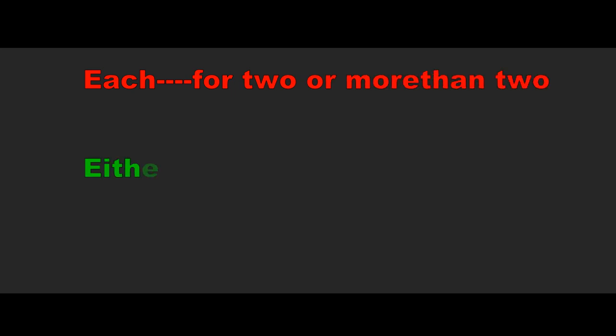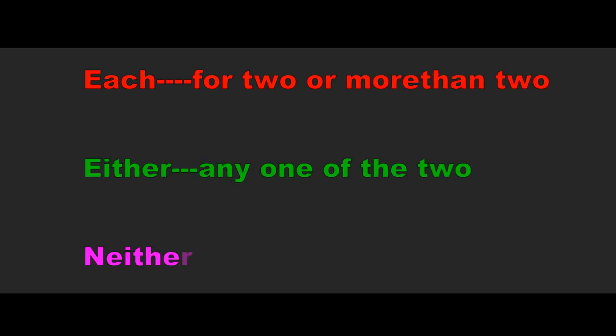Each of the girls — we use 'Each' for two or more. For exactly two, we use Either or Neither. Either means any one of the two; Neither refers to none of the two.